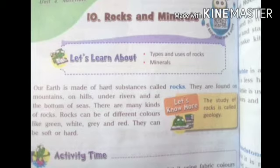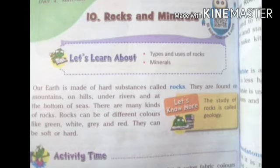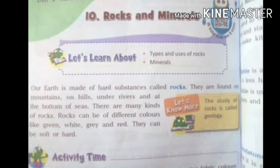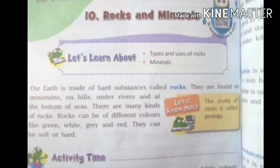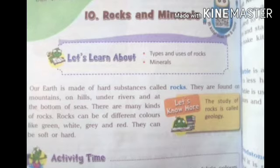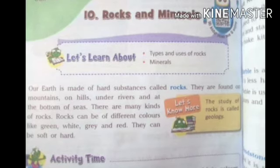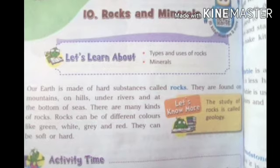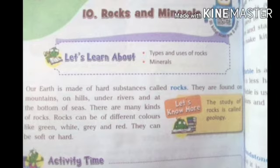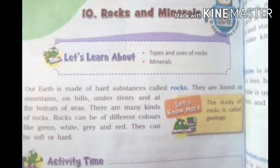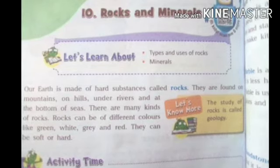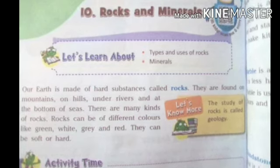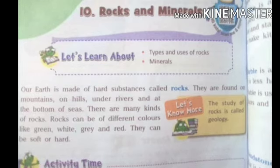Our Earth is made of hard substances called rocks. They are found on mountains, on hills, under rivers, and at the bottom of seas. Due to their large size, they are found at the bottom of seas. Rocks can be of different colors like green, white, gray, and red. They can be soft or hard.